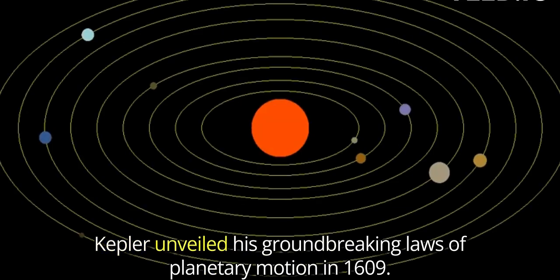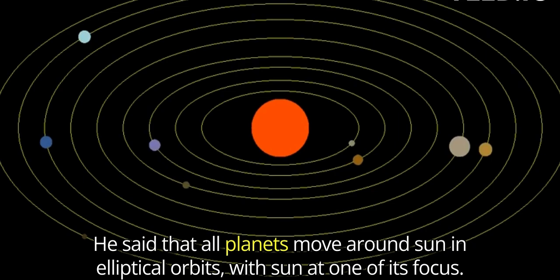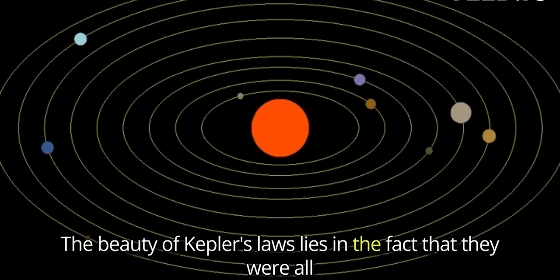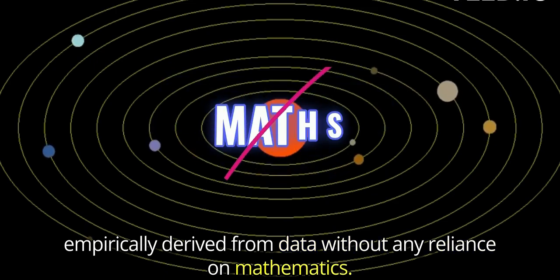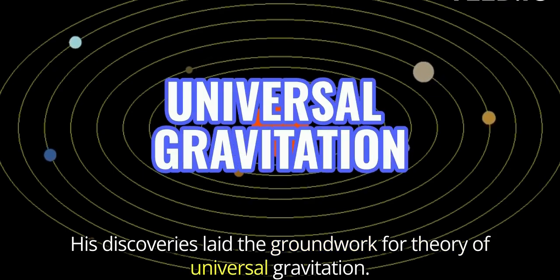Kepler unveiled his groundbreaking laws of planetary motion in 1609. He said that all planets move around sun in elliptical orbits, with sun at one of its focus. The beauty of Kepler's laws lies in the fact that they were all empirically derived from data, without any reliance on mathematics. His discoveries laid the groundwork for theory of universal gravitation.